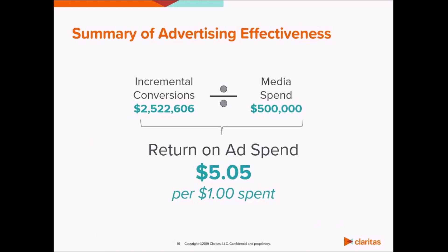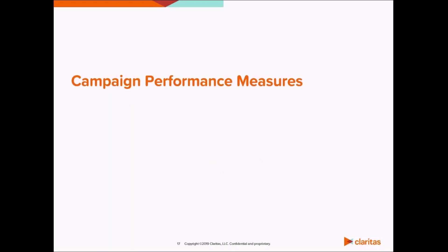Many advertisers use ROAS as an indicator for success of a campaign because they can compare it to past campaigns, whether it's their own or others in the category. Along with a conversion path analysis, we can answer two fundamental questions: What does my consumer's path to purchase look like? And what influence did my marketing have on that purchase?